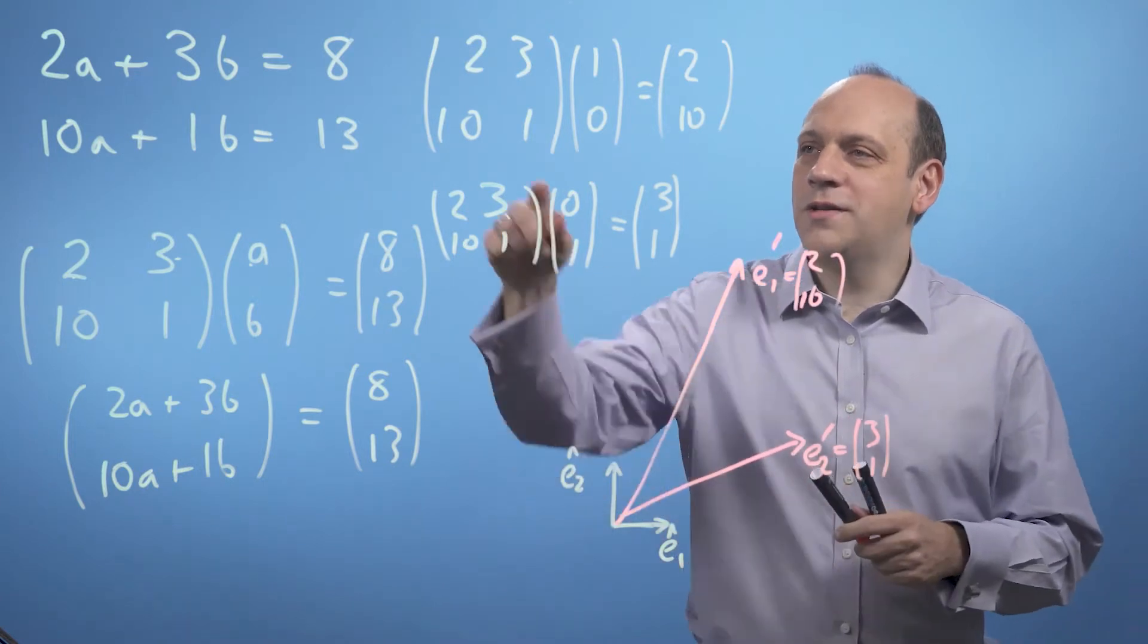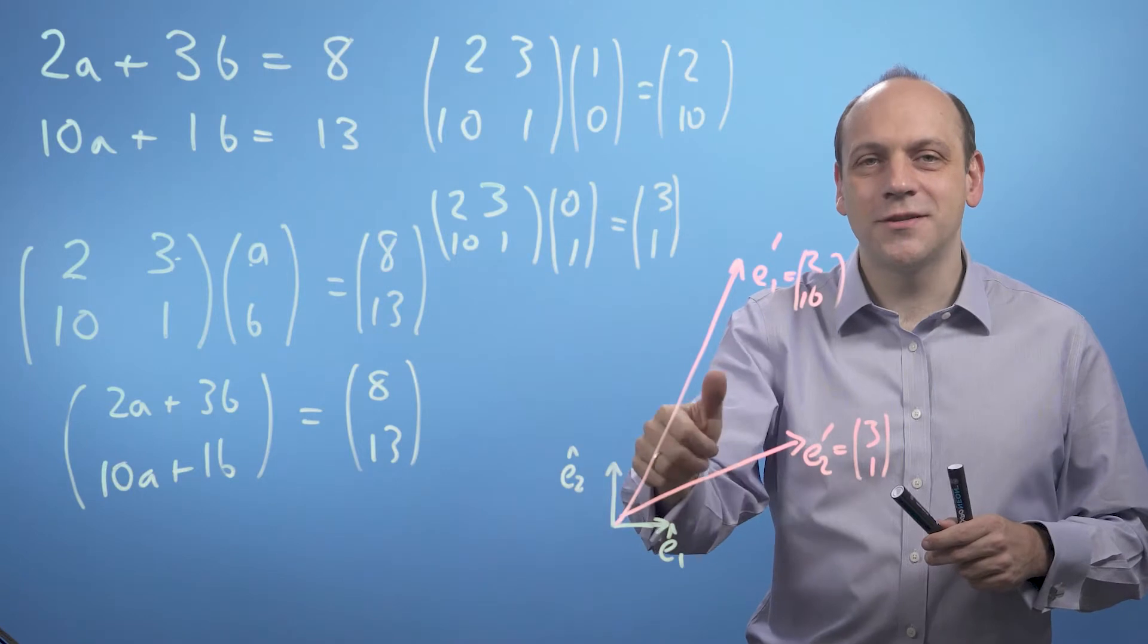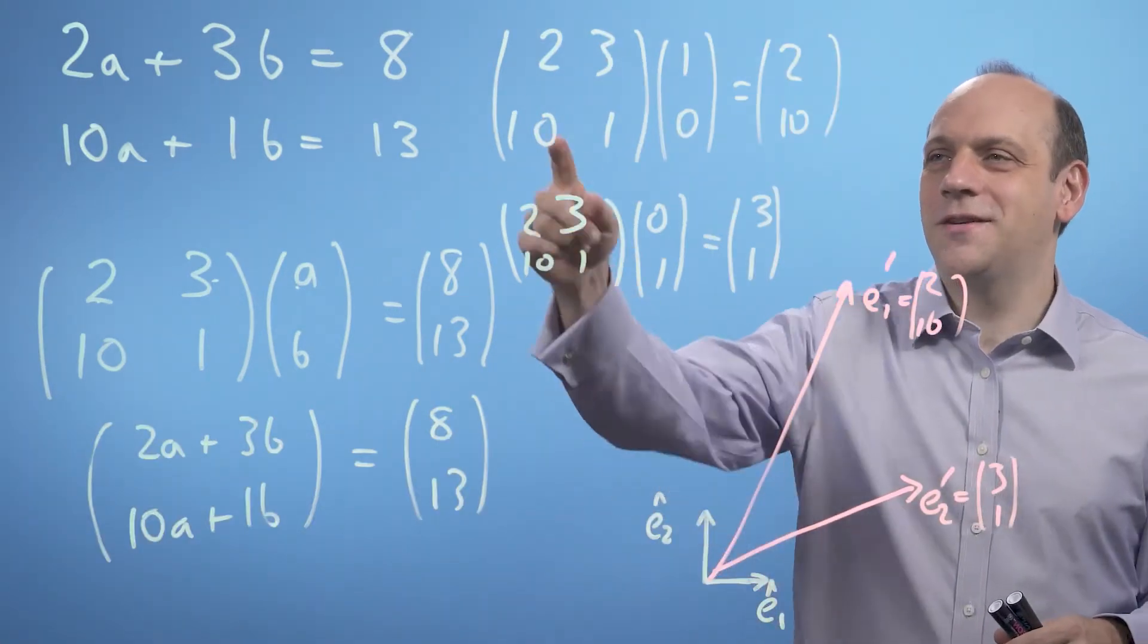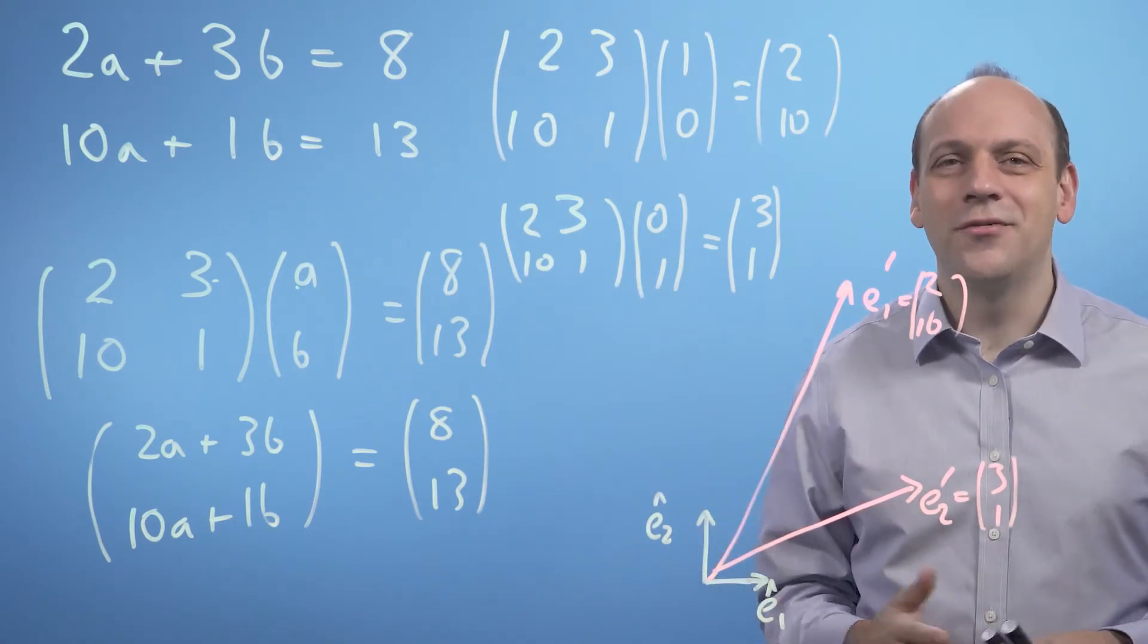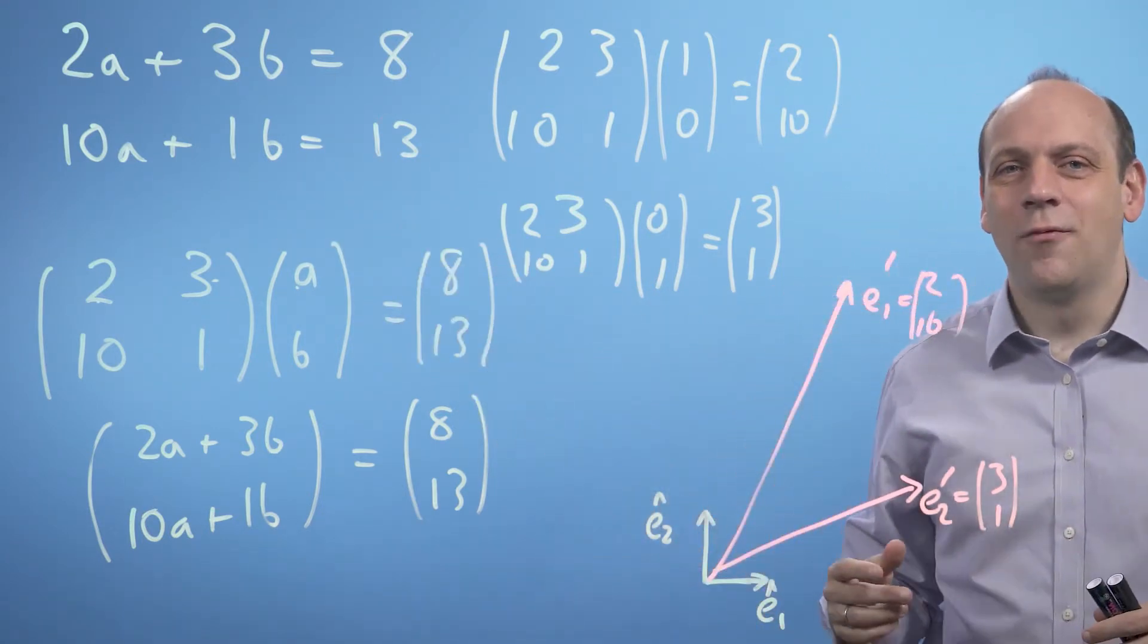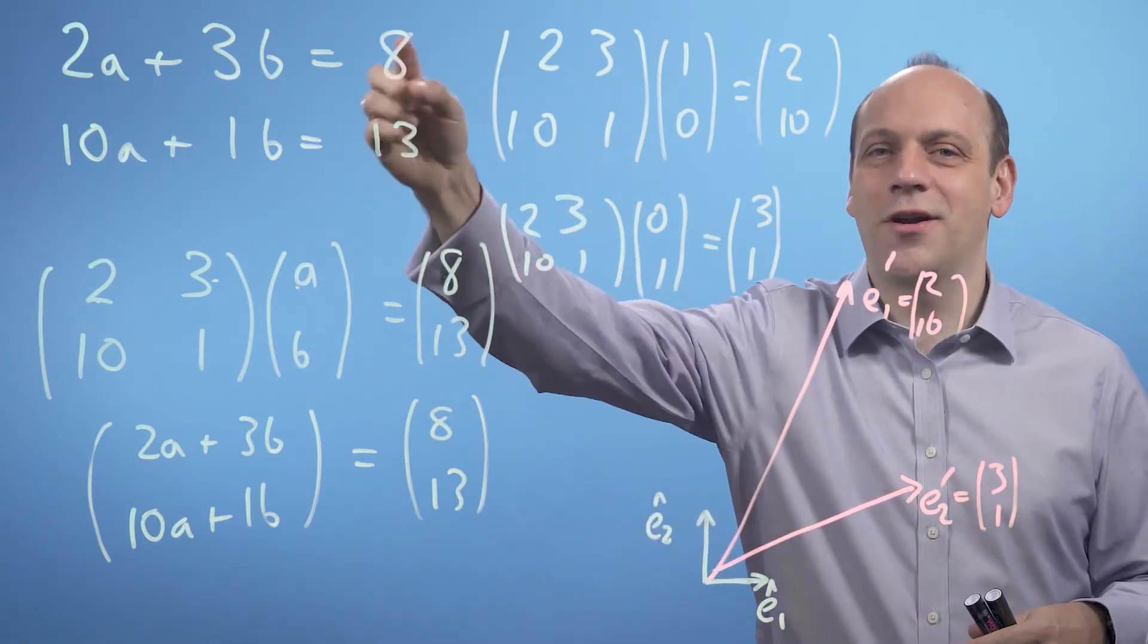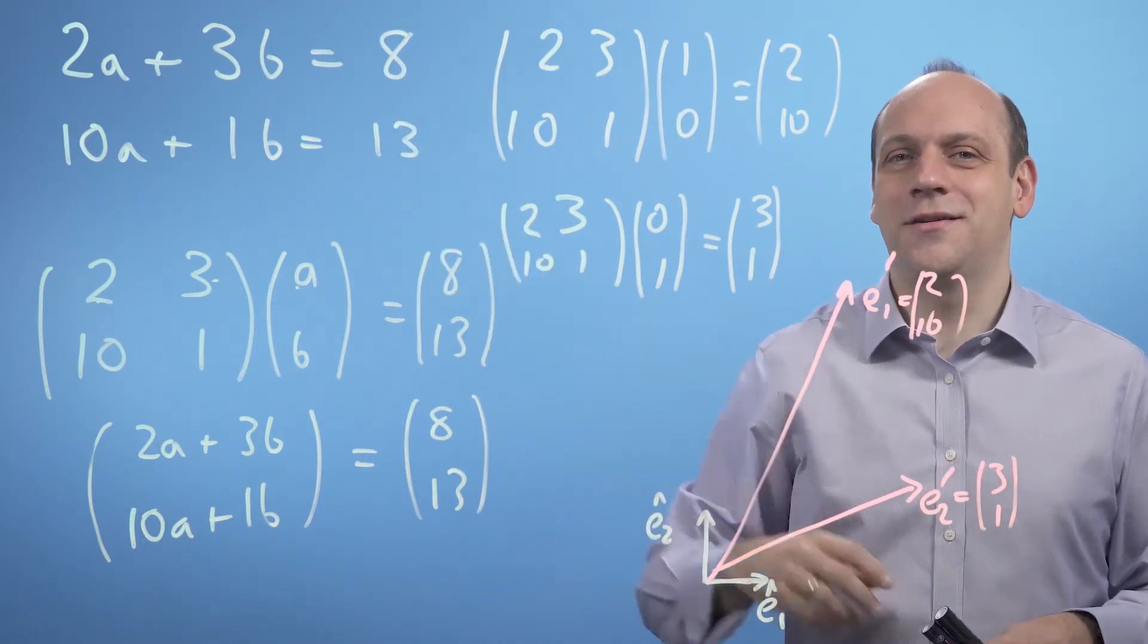So what this matrix does is it moves the basis vectors in some way, it transforms them, it changes the space. So what this matrix 2, 3, 10, 1 does is it's a function that operates on input vectors and gives us other output vectors. And the set of simultaneous equations here is asking, in effect, what vector I need in order to get a transform product at the position 8, 13 in order to get an output of 8, 13.